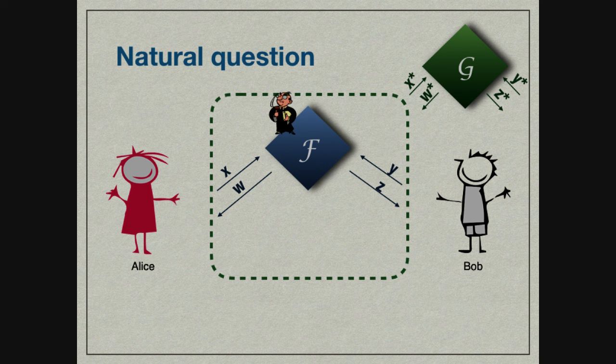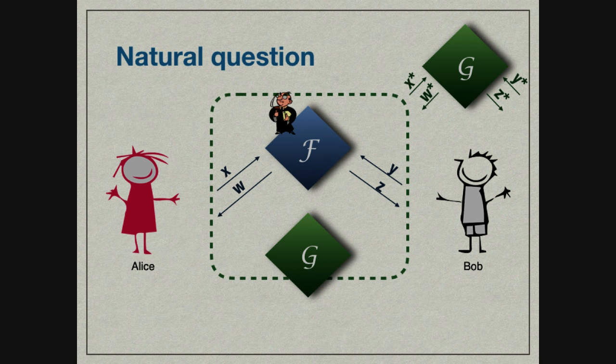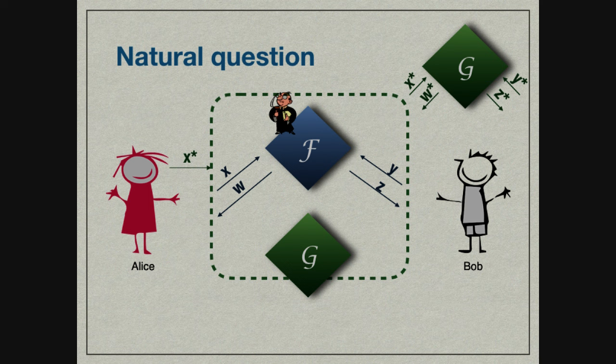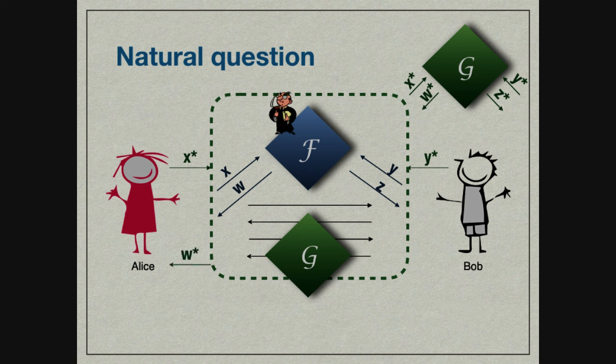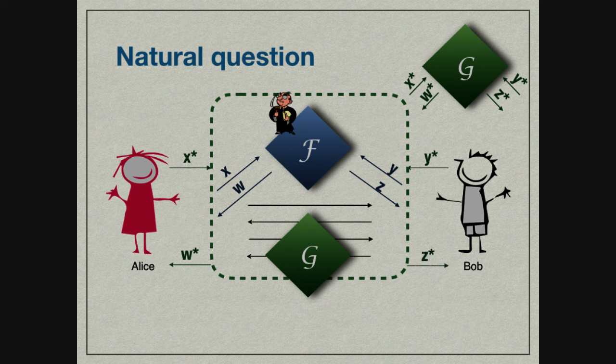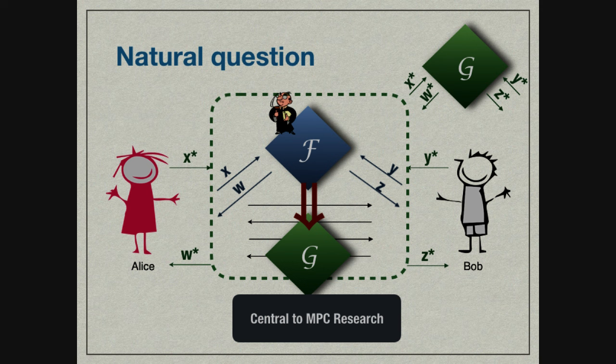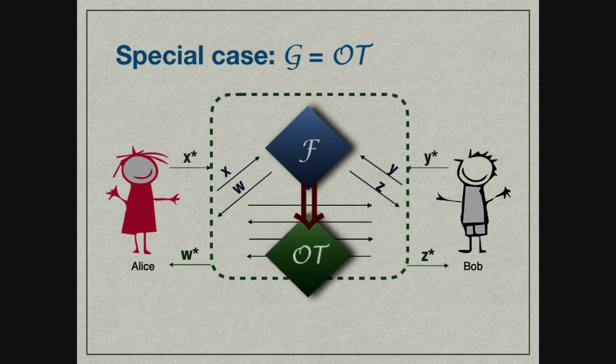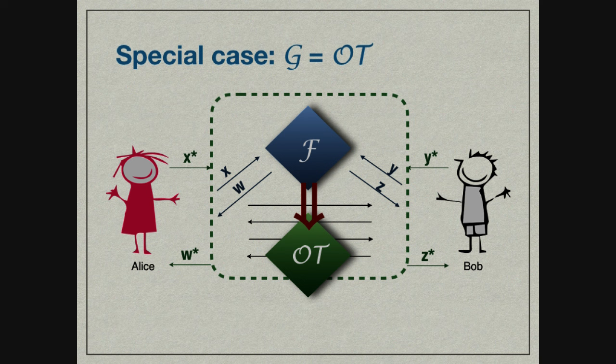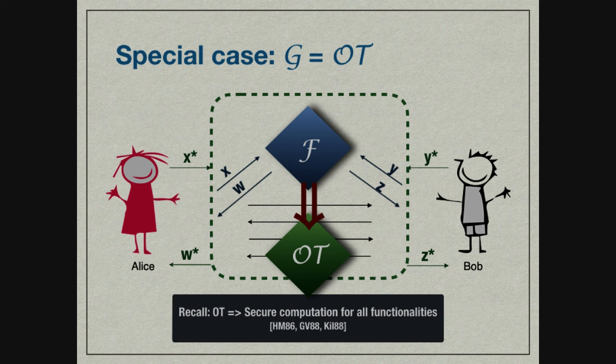Is it possible to securely realize g with just Oracle access to f? They run a protocol with their inputs, make Oracle calls to f, send messages to each other, such that Alice gets output w star and Bob gets z star. We denote this by f implies g. This question is central in MPC research and has been widely studied for the special case when g is oblivious transfer. If any functionality implies OT, it also implies secure computation of any functionality.